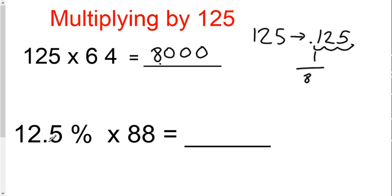Second problem: 12.5% times 88. In your mind, you need to think that 12.5% is the same as 0.125. So you're going to take the non-125 number, divide it by 8, and you get 11.